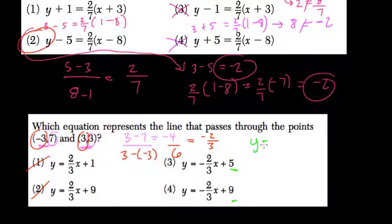So y equals negative 2 thirds x plus b. We can plug in x and y from one of these points. I'll use the positive point. We get 3, 3. So we get 3 equals negative 2 thirds times 3, plus b.